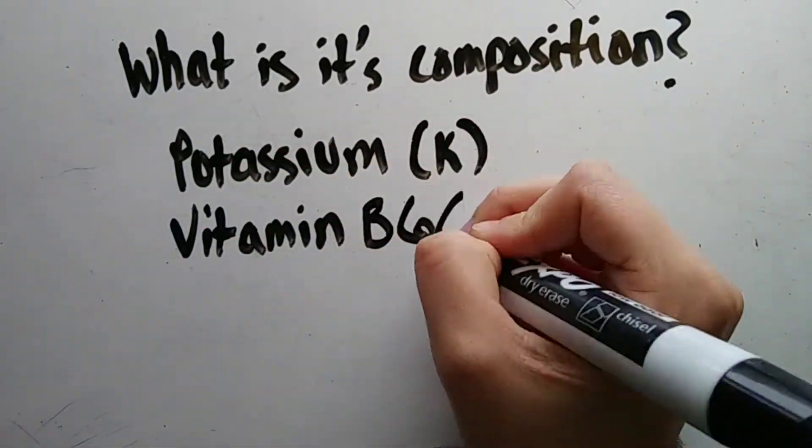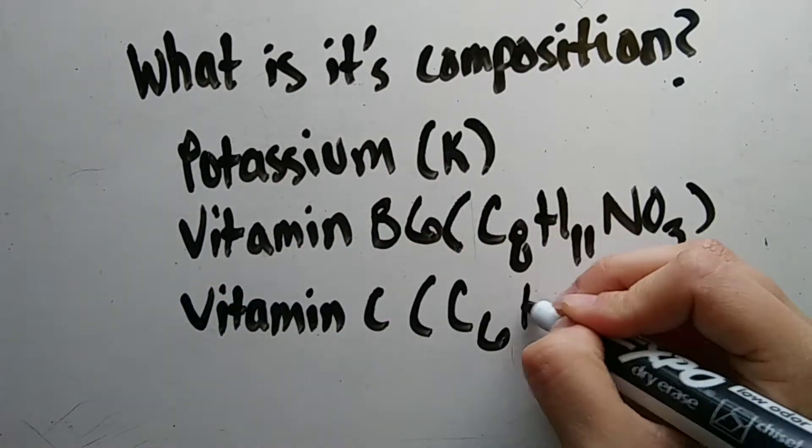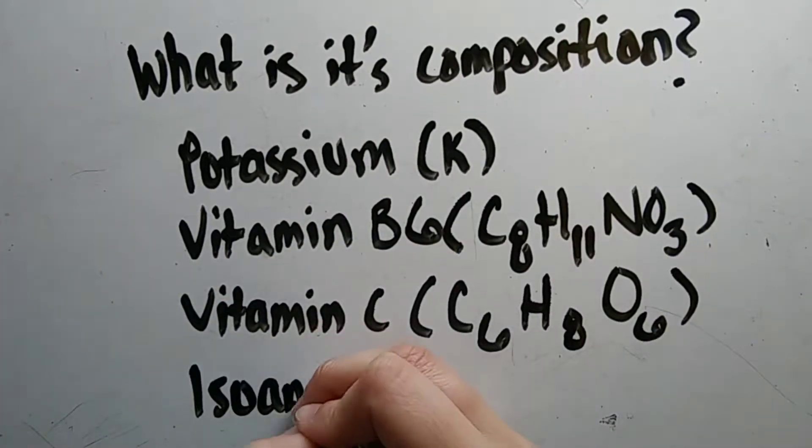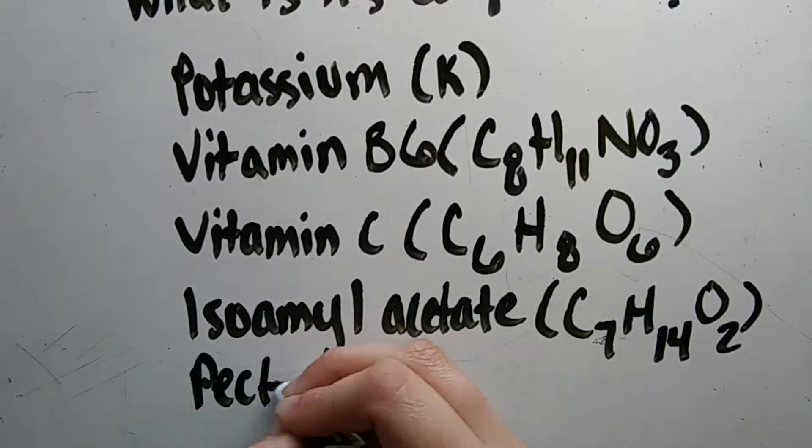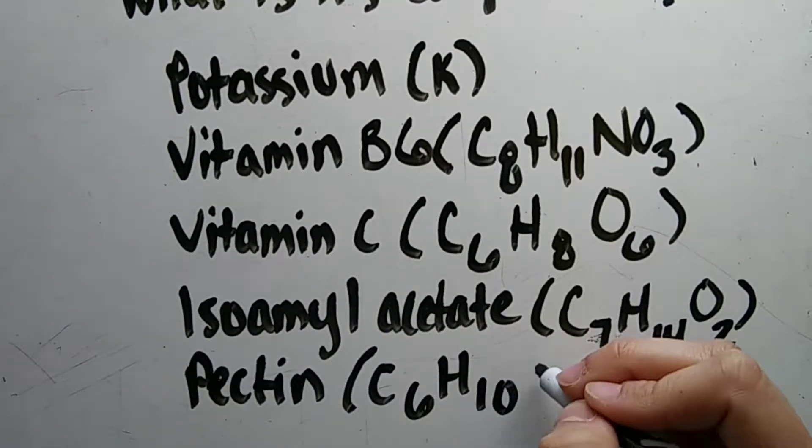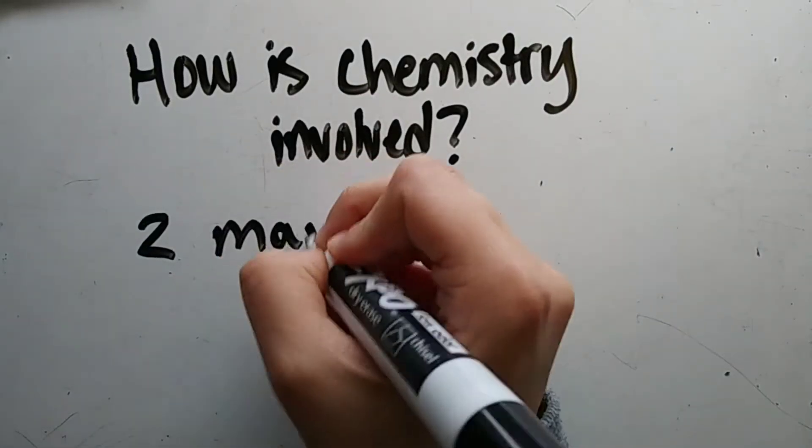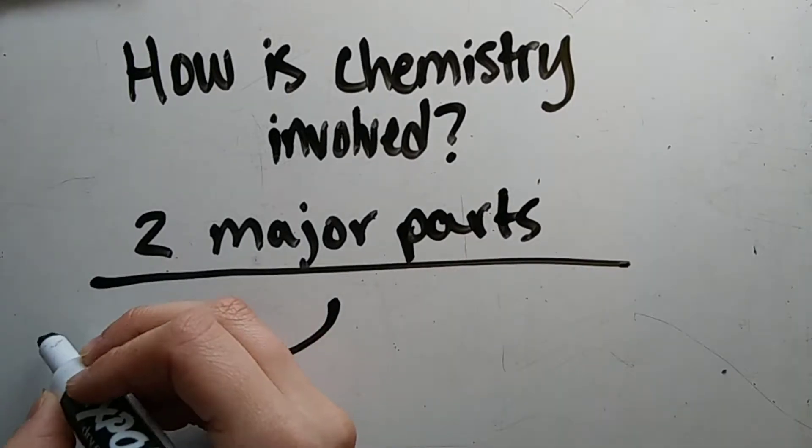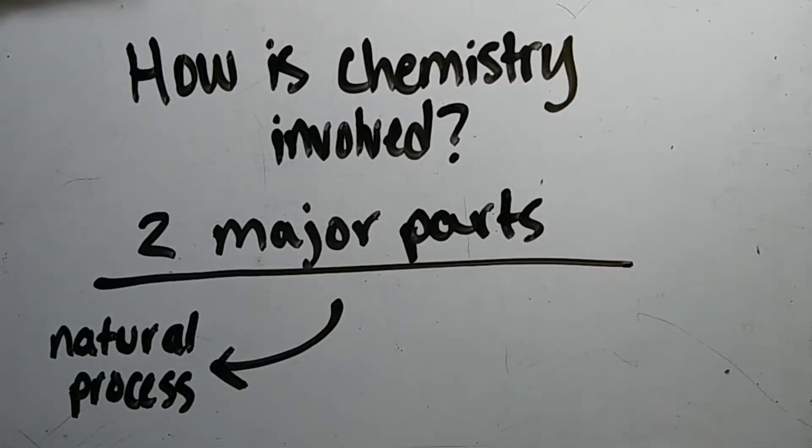How is chemistry involved? Well, you have two major roles. You have your natural process, and from the natural process it involves the banana itself growing. Well, of course naturally you have your main components, and those all come together to help form the banana itself.